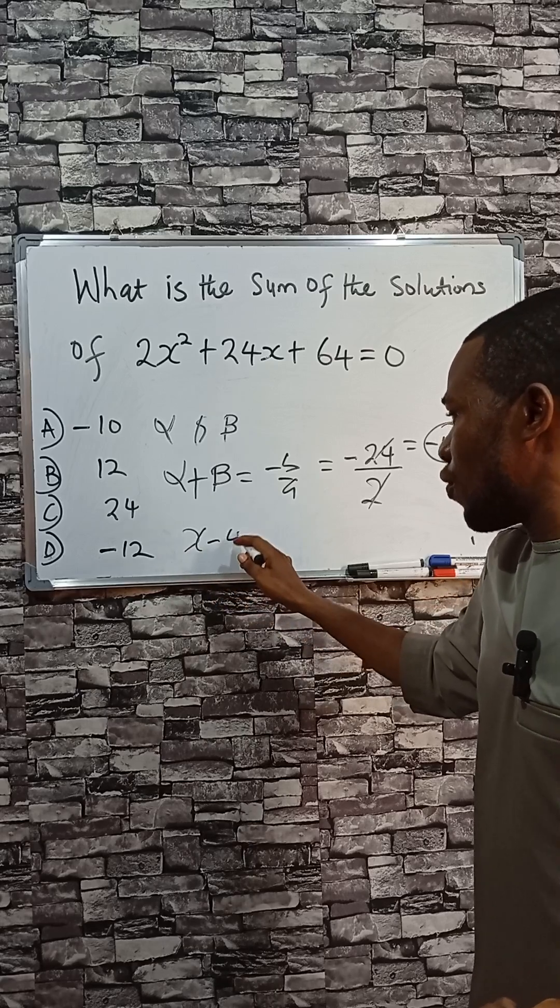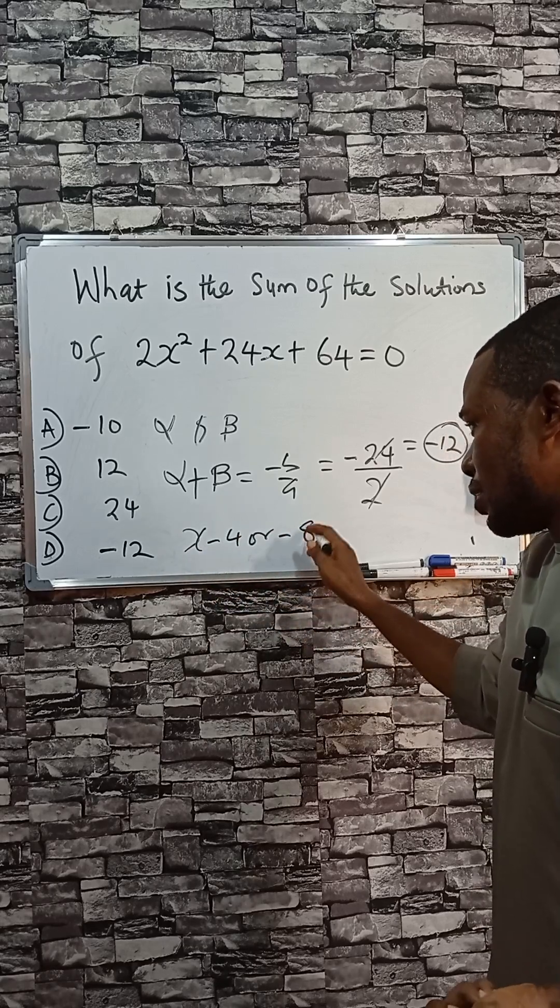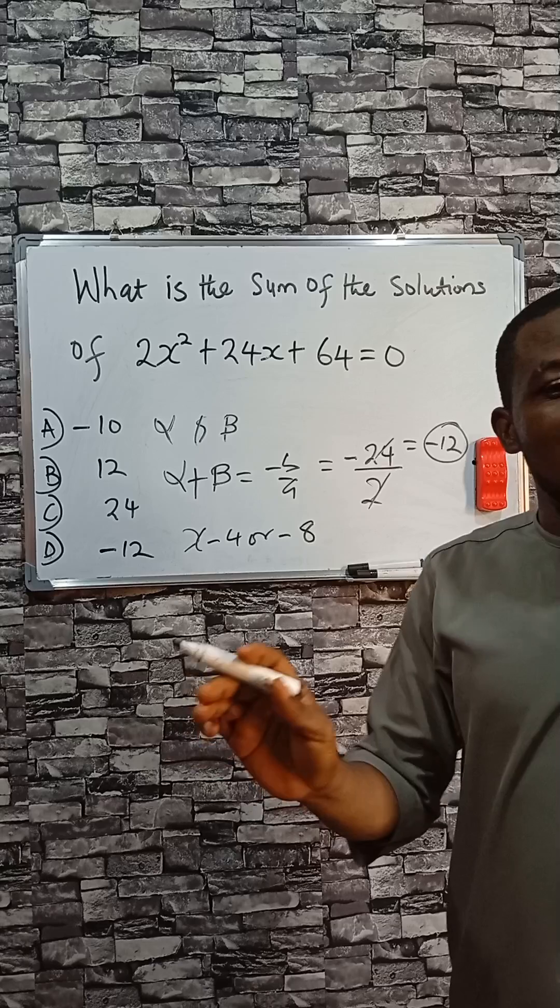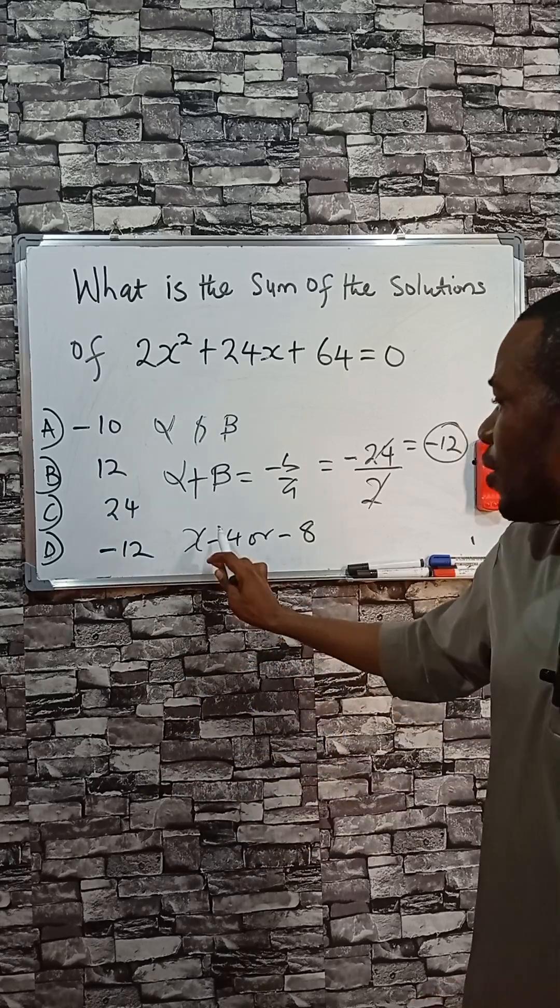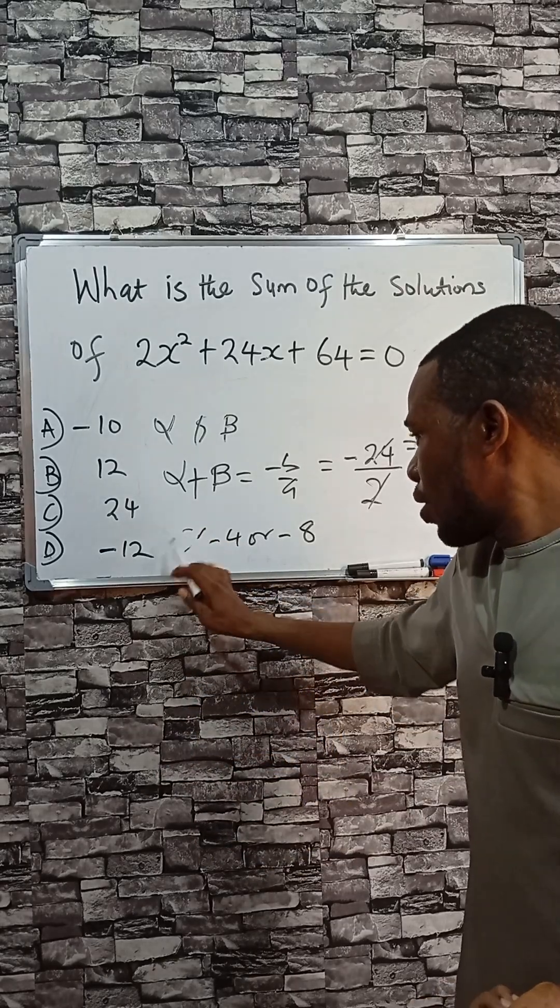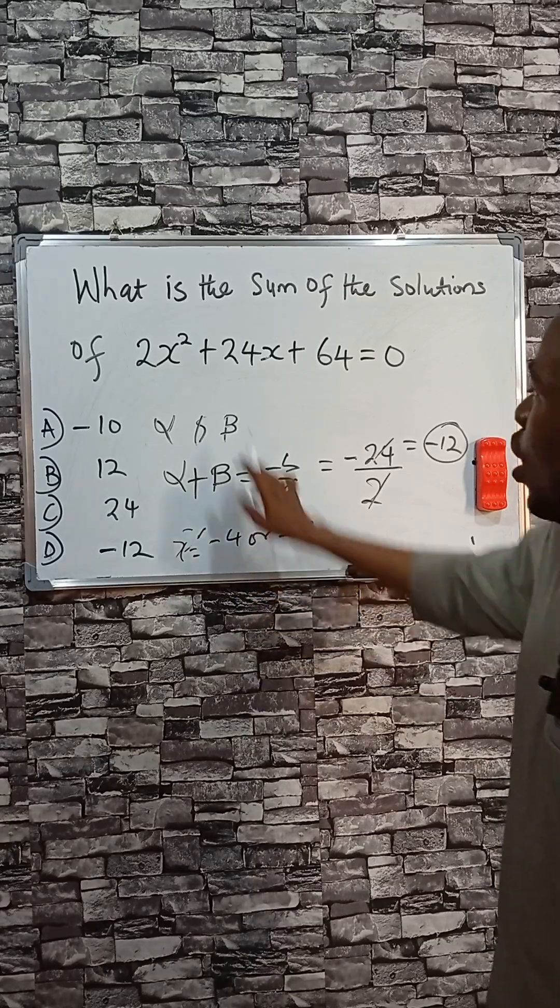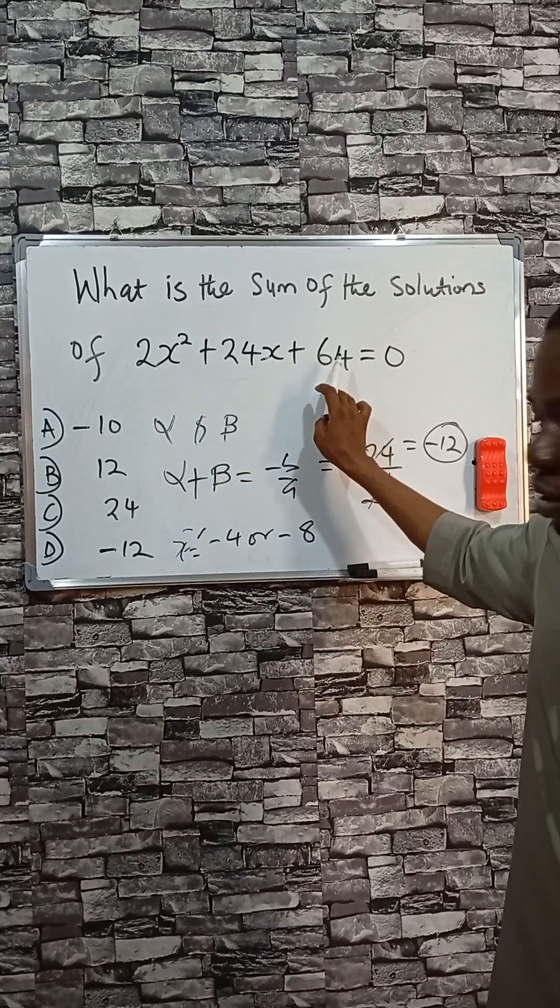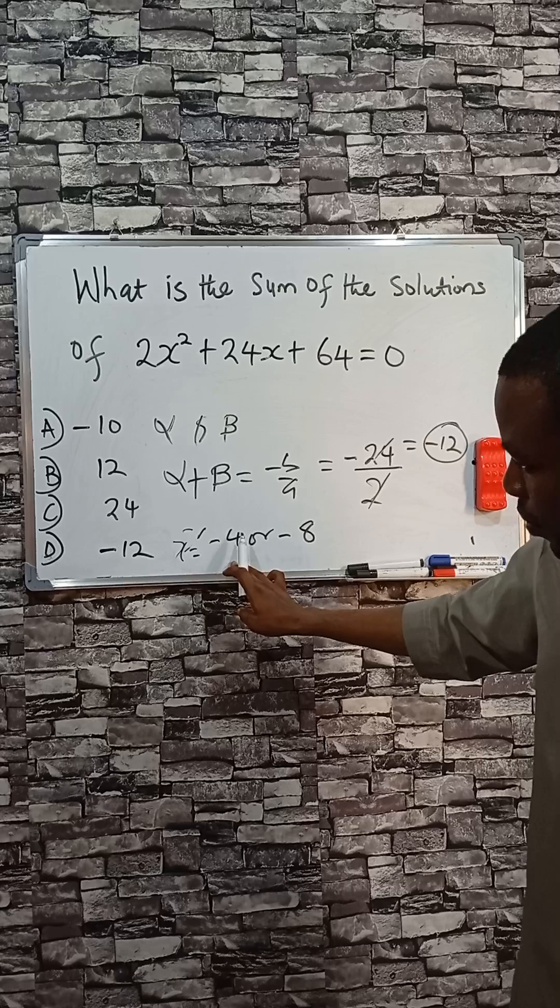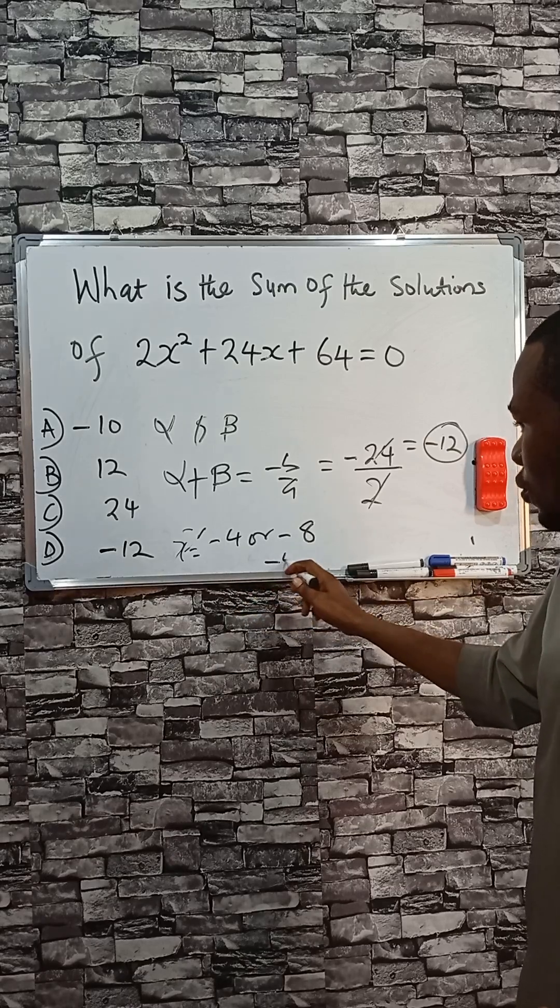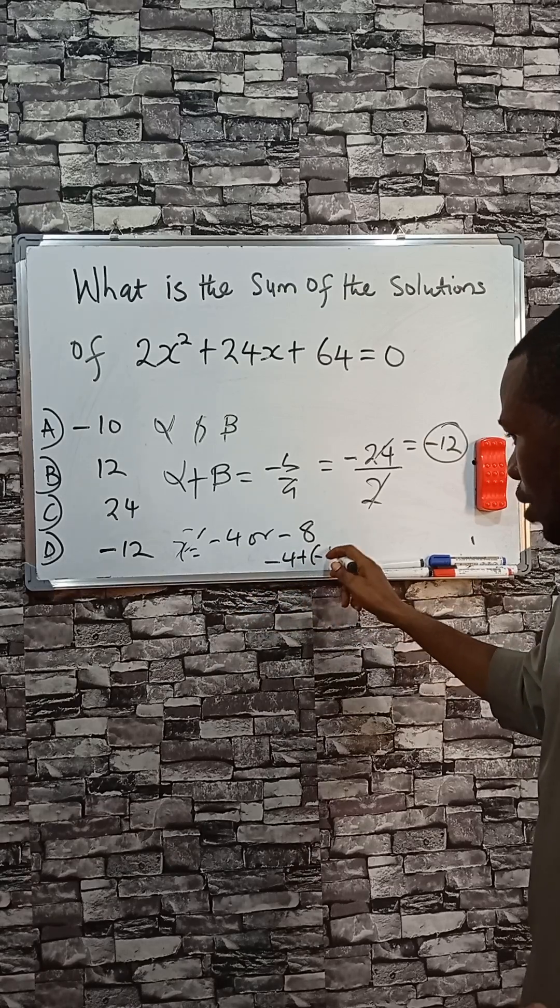Now I want you to try this. Check if you have minus 4 and minus 8 as the value of this equation, the solution to this equation. Now if you add the two roots, minus 4 plus minus 8, you see you have minus 12.